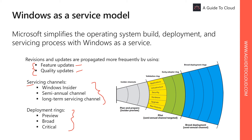Windows as a Service offers three servicing channels, each receiving new feature updates at different frequencies: Windows Insider, semi-annual channel, and long-term servicing channel. These servicing channels provide a method for controlling the frequency at which organizations can deploy Windows 10 features. Deployment rings are similar to groups your organization might have used to manage updates to earlier versions of Windows.